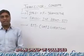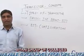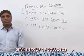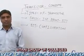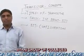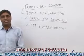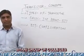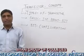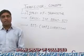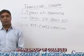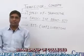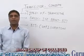BJT is of two types: NPN and PNP. In an NPN transistor, the emitter and collector are of the same type of semiconducting material — specifically n-type — and the base is a thin layer of the opposite type, which is p-type semiconducting material.